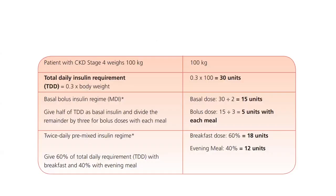For example, a patient with CKD stage 4 weighing 100 kg: total daily insulin dose = 0.3 × 100 = 30 units. For basal-bolus regimen, basal dose = 30 ÷ 2 = 15 units (long-acting), and bolus dose = 30 ÷ 2 = 15 units (short-acting), spread across three meals — so 5 units with each meal.